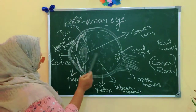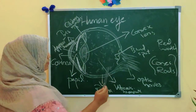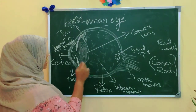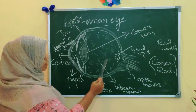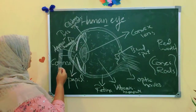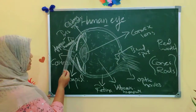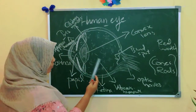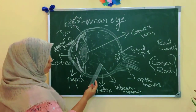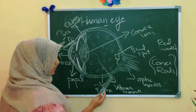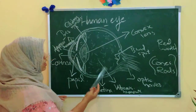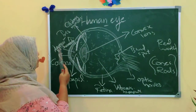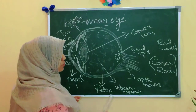Our eyeball is divided into two chambers. The first chamber is filled with a jelly substance called aqueous humor. The second chamber is filled with vitreous humor — also a jelly-type substance. So both chambers are filled with some type of jelly substance: the first with aqueous humor and the second with vitreous humor.